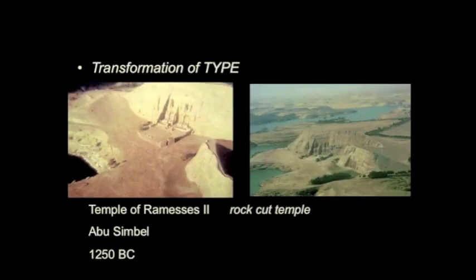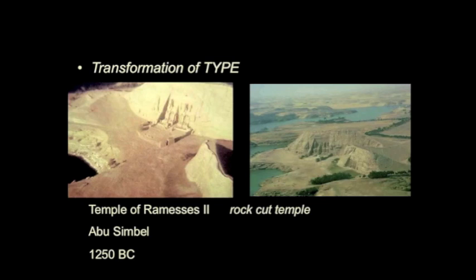At the Hatshepsut temple the landscape is engaged aggressively to amplify the scale of the building and connect to the notion of the mountain. Here's another Ramses II temple, farther up the Nile toward Nubia — Abu Simbel. This temple is completely rock-cut. The processional spaces that led up to the Hatshepsut temple are all interiorized. The pylon itself becomes a carving into the living rock of the cliff.